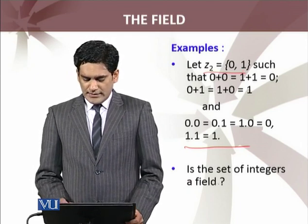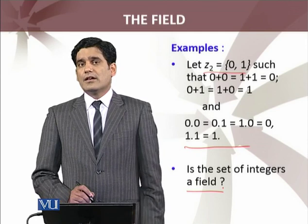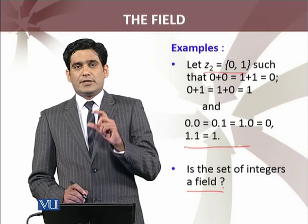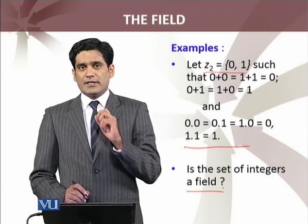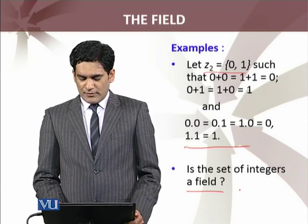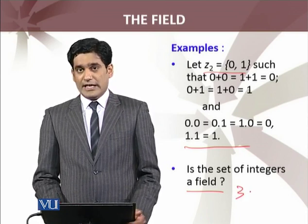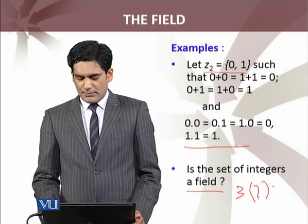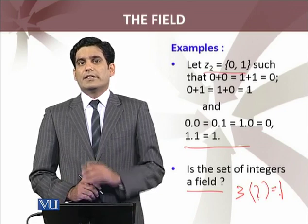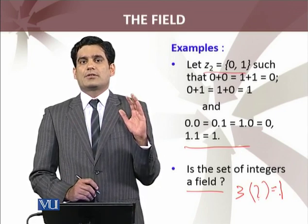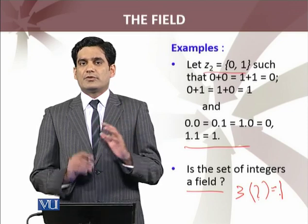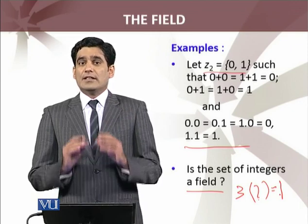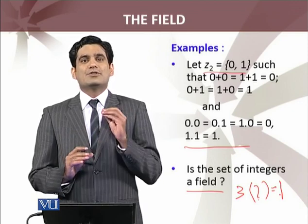I have posed a question: Is the set of integers a field? The set of integers has additive identity and additive inverse. What about the multiplicative inverse? If you have three, let's say, an integer, is there an integer such that you multiply it and the answer is one? There is no such integer. That's why the field property axiom is not satisfied. We will conclude that the set of integers is not a field.